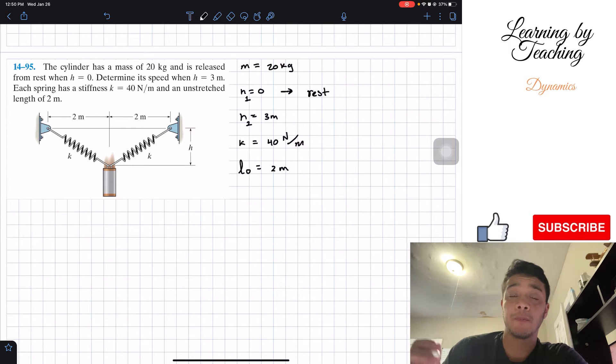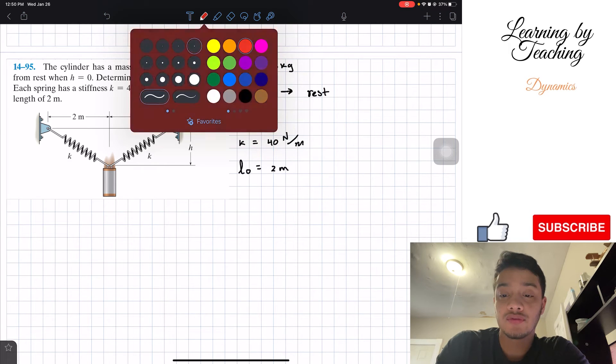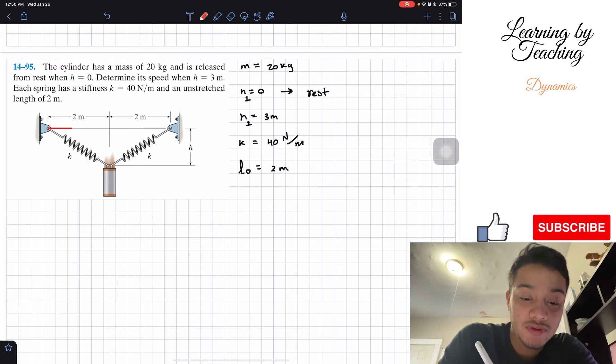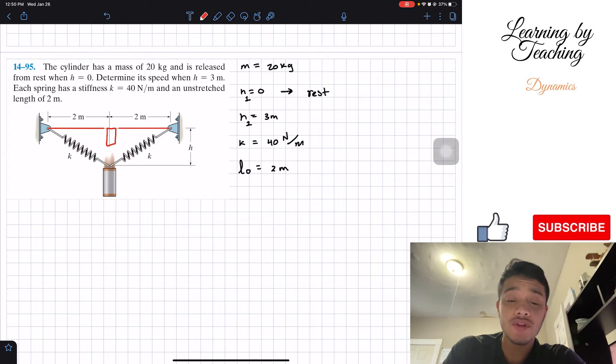Now after this, what I would like to do is give a little drawing of what position one would look like. Position one would look something like this: we have our strings until here, then we have our cylinder, and then we have our second spring. So that will be position one.